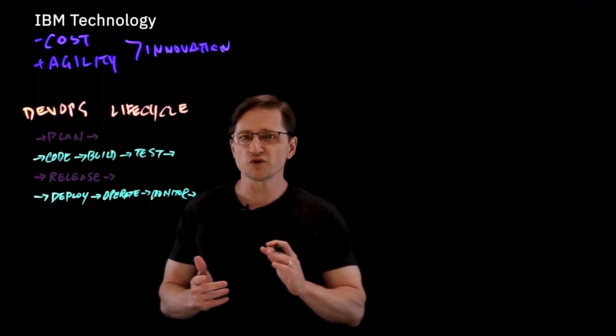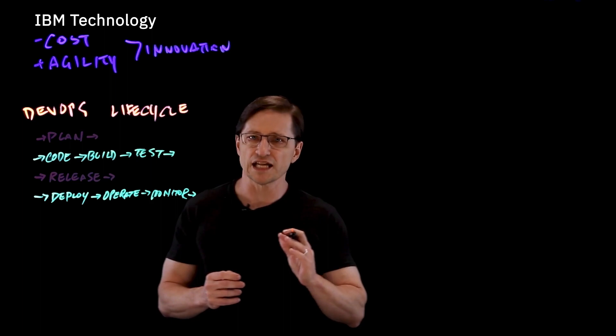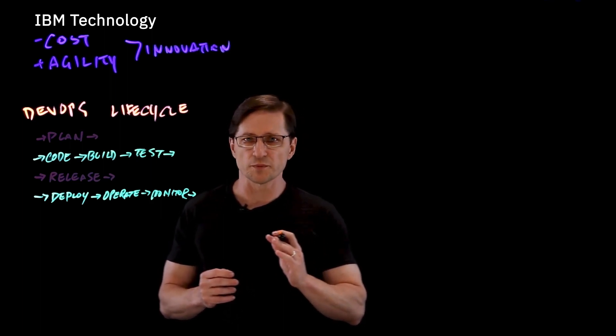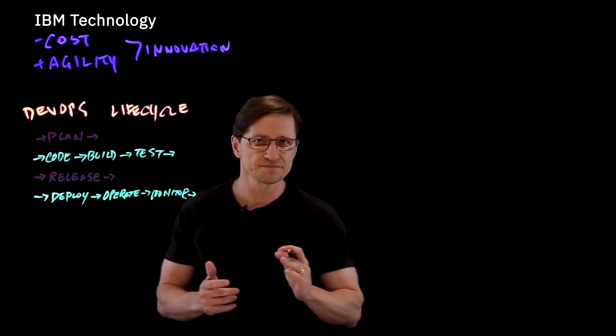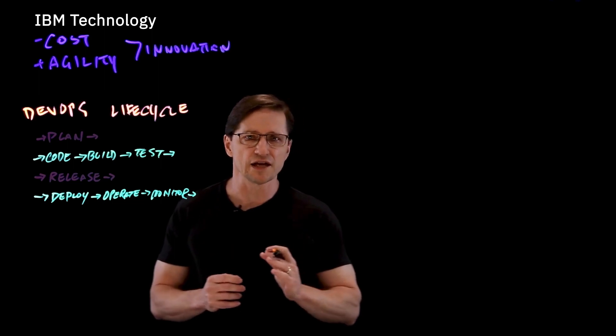To make things more concrete, I'll illustrate the points through OpenLiberty. It's a Java runtime designed for modern cloud native application delivery. It's the upstream open source for WebSphere Liberty, just like Fedora is for Red Hat Enterprise Linux. Let me explain how DevOps agility applies to cloud adoption.